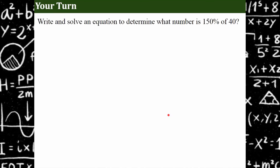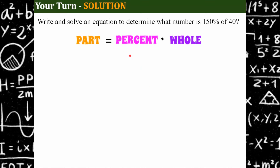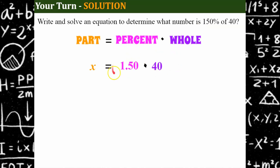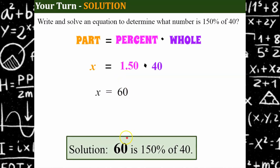Here's another one — no hints. Pause, write your equation, and solve. Our percent equation: the part — what number — is unknown. Write 150 percent as a decimal: remember you move the decimal two spaces to the left to go from percent to decimal, giving 1.5, and multiply by the whole, which is 40. To solve: 1.5 × 40 = 60. So our solution is that 60 is 150 percent of 40.